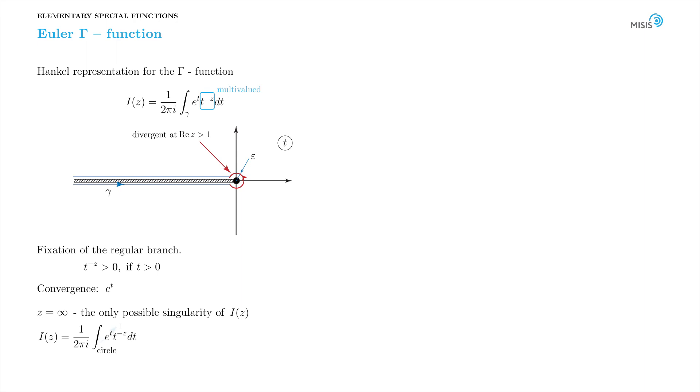In the vicinity of the origin, we can change the exponential to 1 and the integral becomes t to minus z. We rewrite and obtain the following result.